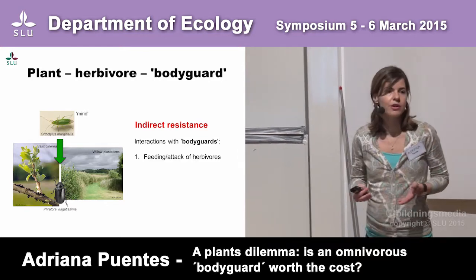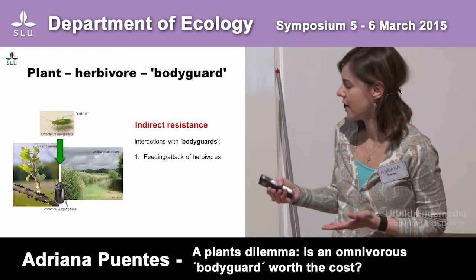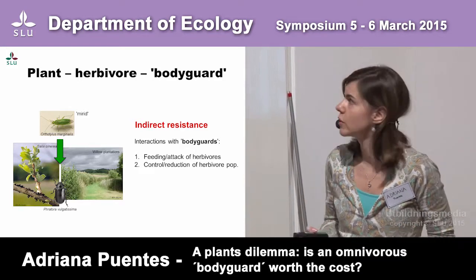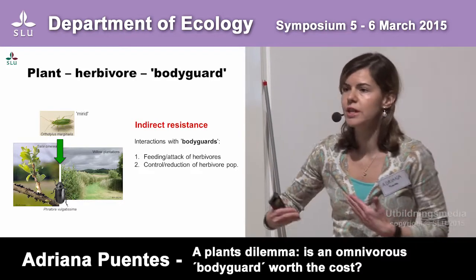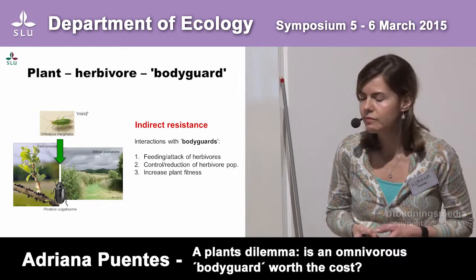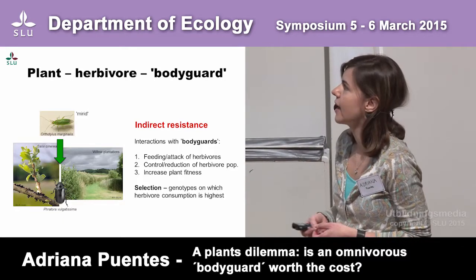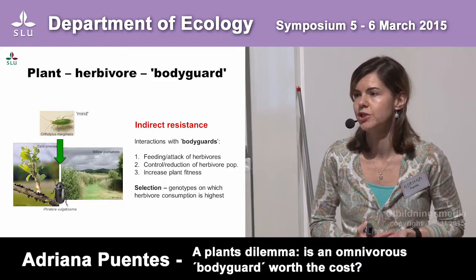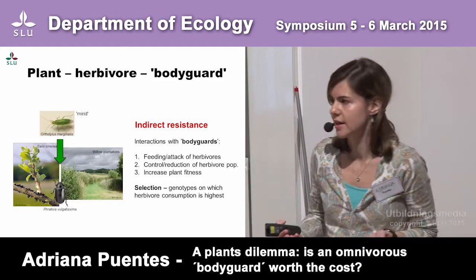The bodyguards have to feed or attack the herbivore in a way that reduces or controls the herbivore population, and this, in theory, should lead to an increase in plant fitness. From this, you would then expect that natural selection favors those genotypes in which herbivore consumption or herbivore reduction is highest.